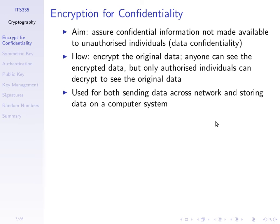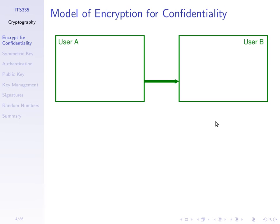Most of the examples we'll use will be sending across a network. A simple model is that we think there are two users, A and B. A wants to send a message to B, and A and B want this message to be confidential — meaning no one else in the world should be able to read that message except B. Anyone else in the world we'll represent as just one other user, an attacker, user C.